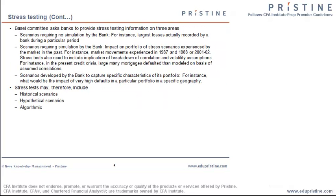The Basel committee asks banks to provide stress testing information on three areas. Firstly, there are scenarios that require no simulation — for instance, the largest losses actually recorded by a bank during a particular period. Secondly, there are scenarios that require simulation, such as the impact on a portfolio of stress scenarios experienced by the market in the past — for example, extreme market movements such as those experienced in 1987, 2000-2001, or 2008.